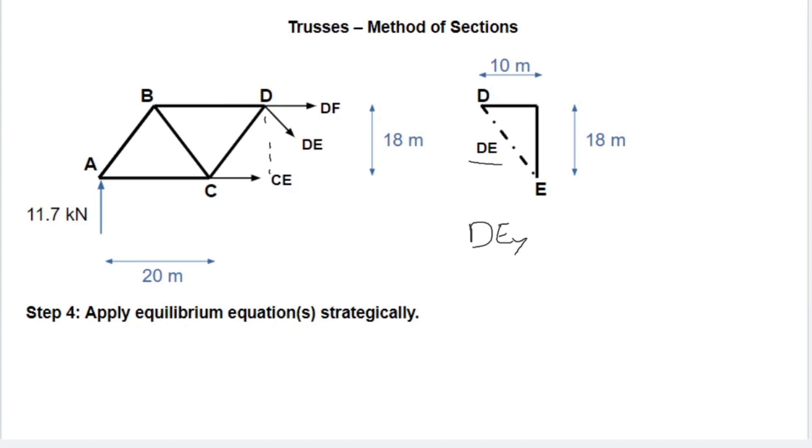And as we said, DEY, when this is theta, is DE sine theta. So if we have DEY, which is 11.7 kilonewtons, DE is what we're trying to find. Sine theta we could solve a lot of ways, but if we just do it simply geometrically, we know that sine is the opposite over the hypotenuse of this shape. So the opposite to that angle is 18 meters.